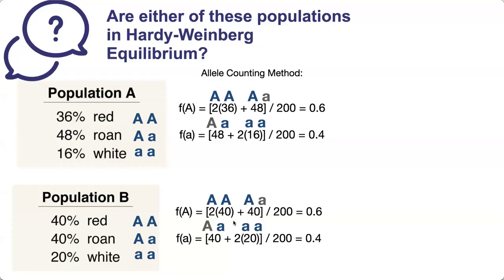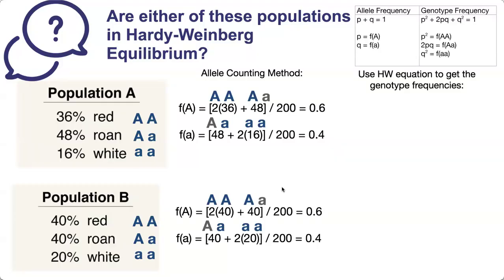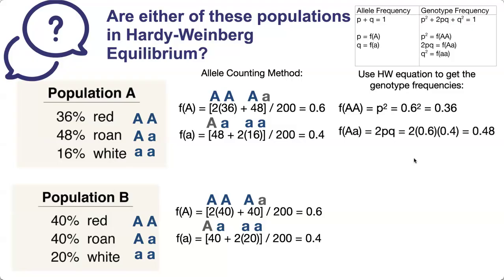So how do we know which population is in Hardy-Weinberg equilibrium? We're going to use the Hardy-Weinberg equation to get the genotype frequencies. Up here is the allele frequency equation as well as the Hardy-Weinberg equation, which is the genotype frequency equation. The frequency of big A big A is p squared — 0.6 squared — which equals 0.36. The frequency of big A little a, our heterozygote, is 2pq, so 2 times 0.6 times 0.4, which gives 0.48. And frequency of little a little a is q squared — 0.4 squared — which results in 0.16.